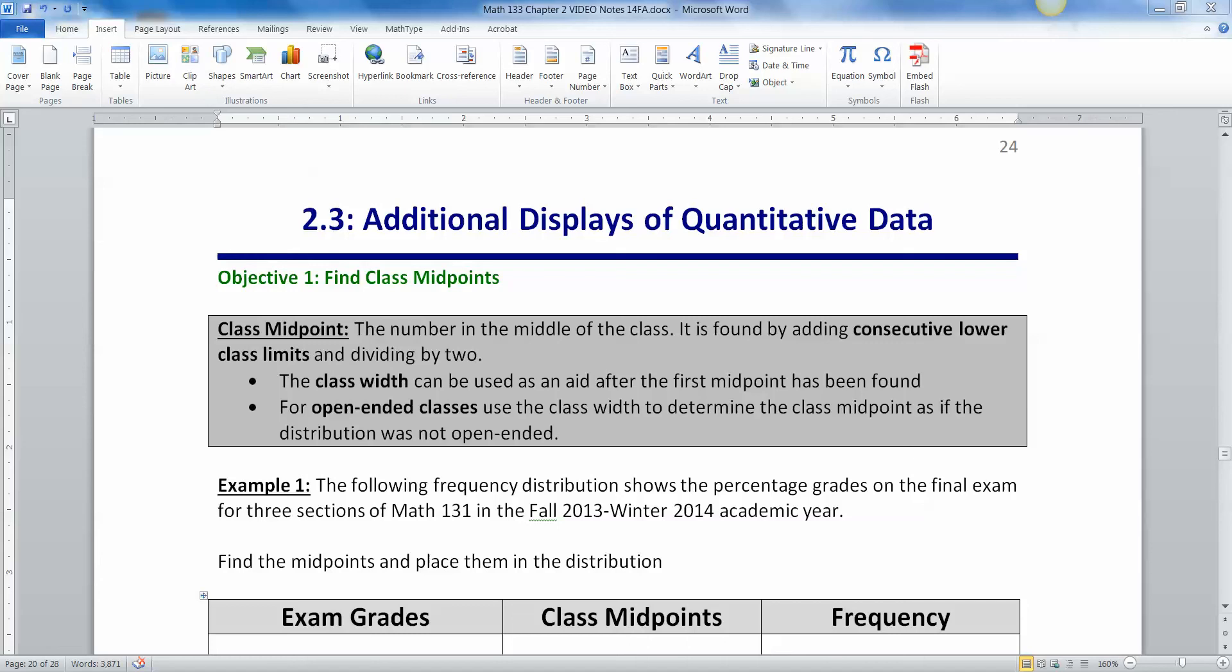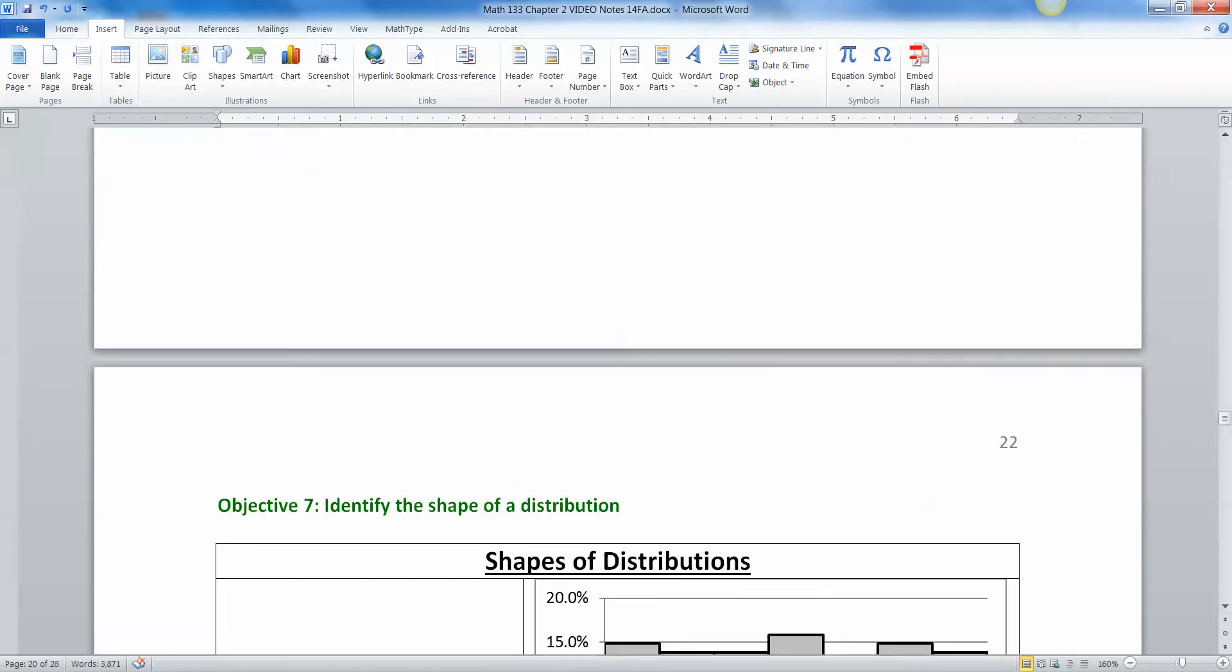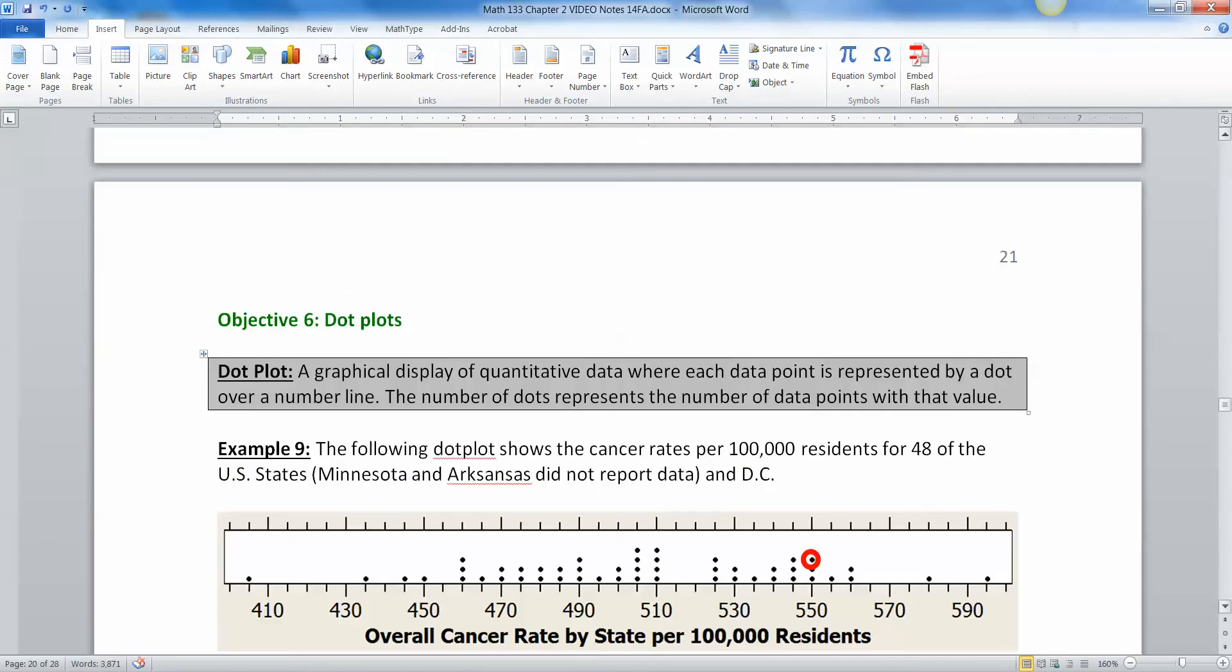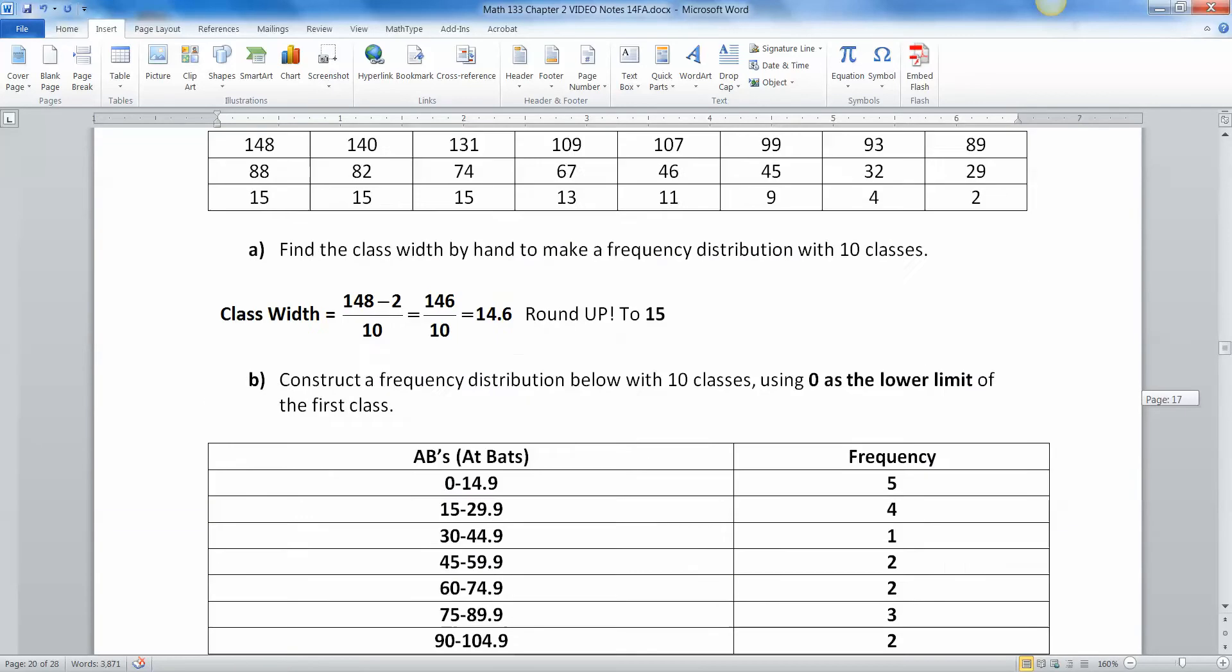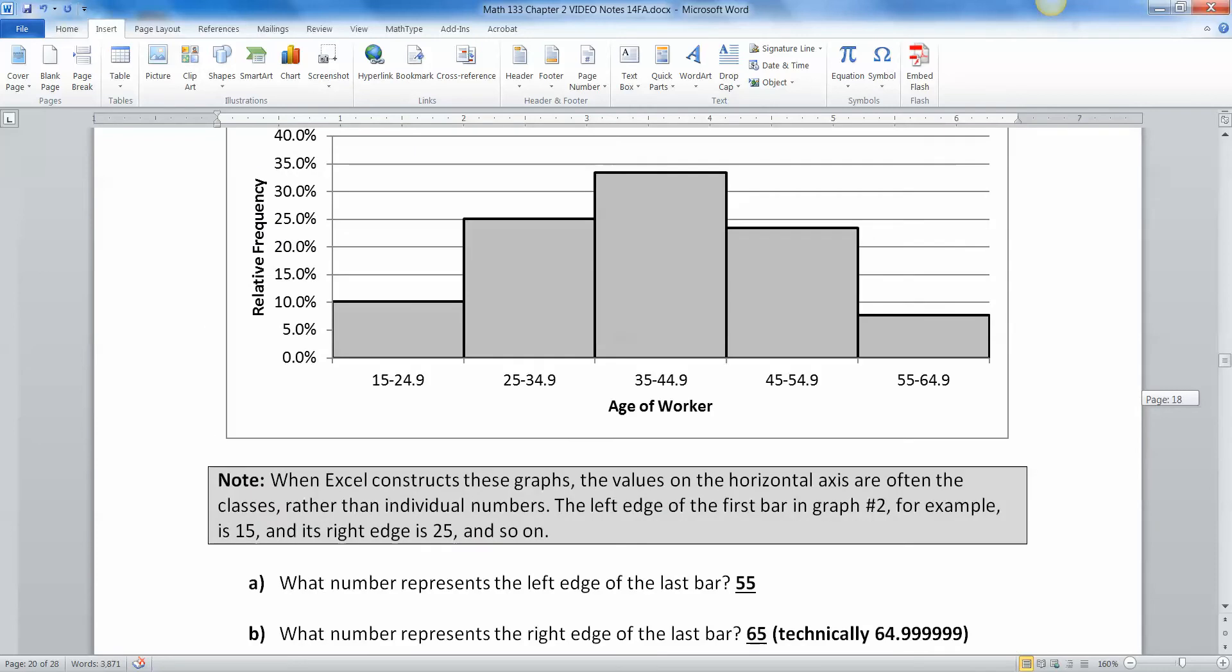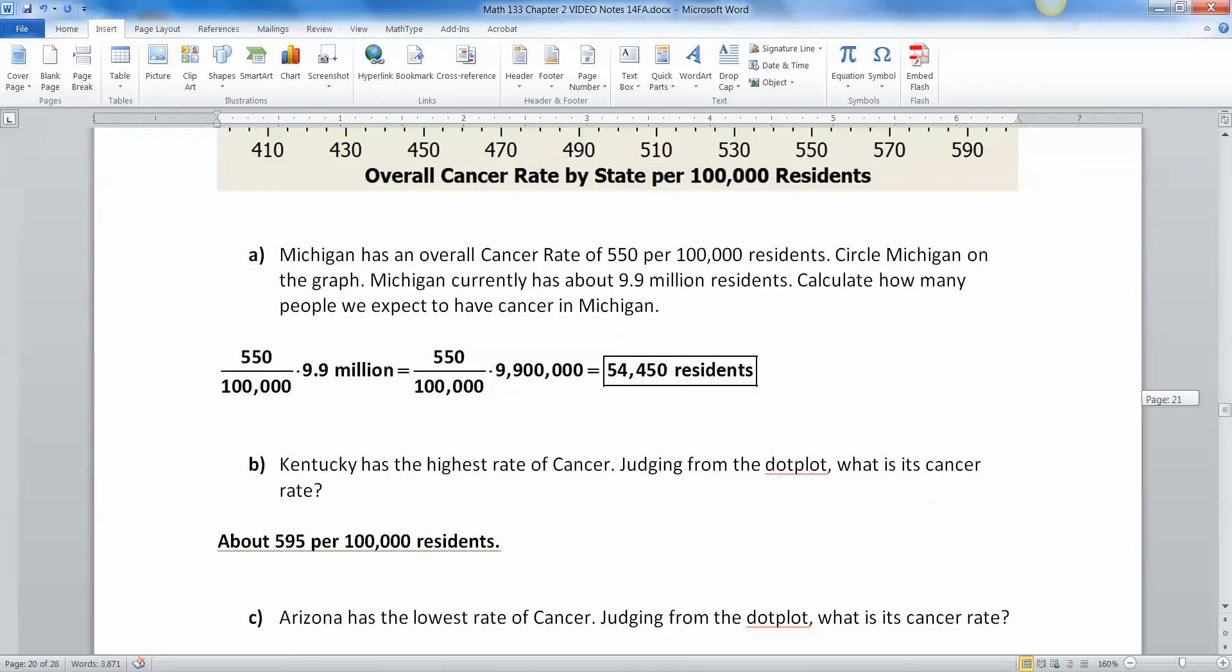In section 2.3, we're going to look at additional displays of quantitative data. Remember, we've already found a whole bunch of different things, like the frequency distribution, the relative frequency distribution, the cumulative frequency distribution way back here. Then we've also found histograms right there, and relative frequency histograms, and then we looked at stem and leaf plots and dot plots.